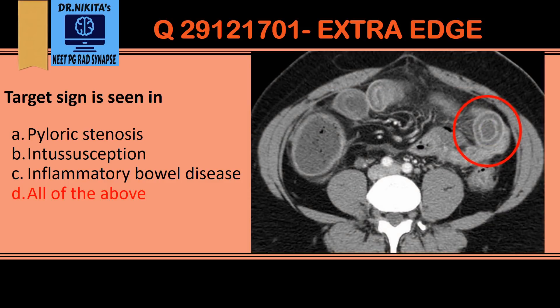The target sign is also seen in inflammatory bowel disease and any bowel inflammation, such as pseudomembranous colitis, ischemic bowel disease, Crohn's disease, and ulcerative colitis. Here the inner circle is the mucosa, the outer circle is the muscularis or serosa, and the black part in the middle is the edematous submucosa in bowel inflammation.